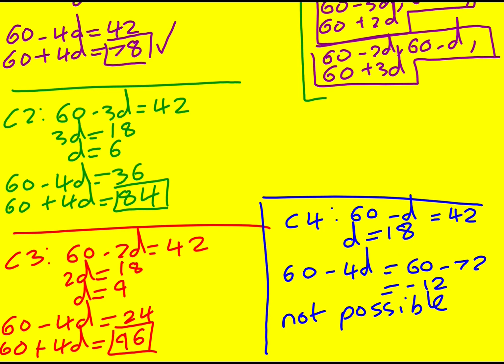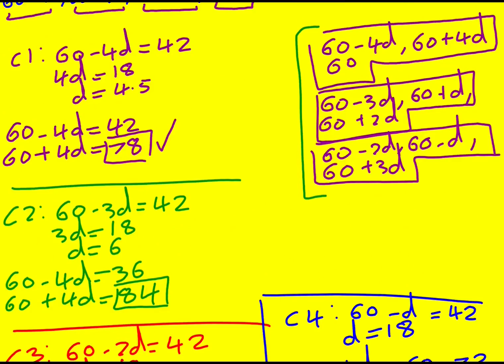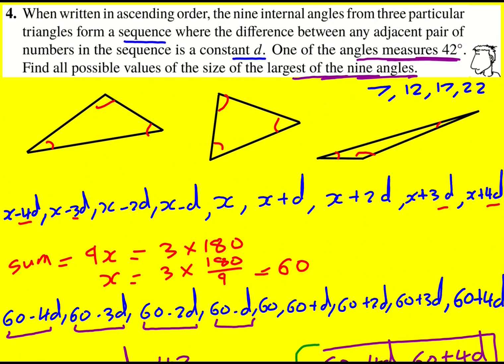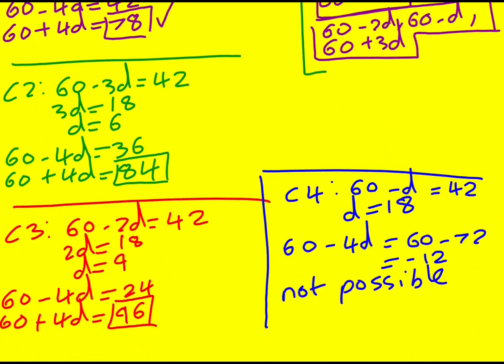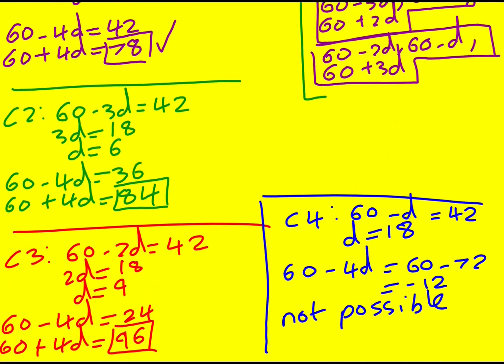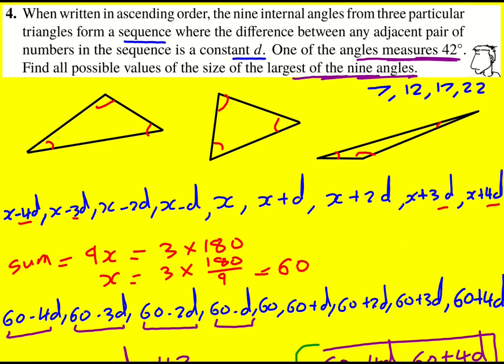Find all possible values of the size of the largest of the nine angles. It's going to be these three here: 78, 84, 96.